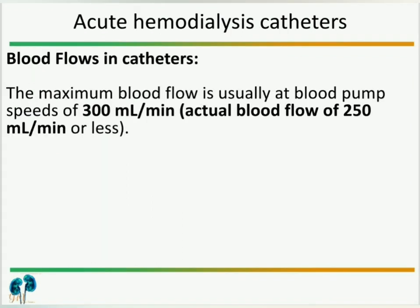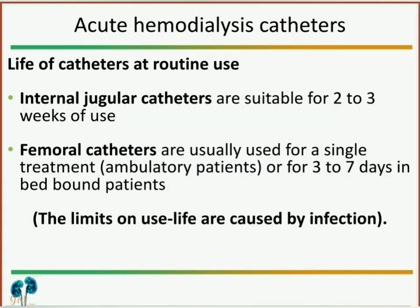For acute hemodialysis catheters, the maximum blood flow we can set is 300 ml per minute. However, the actual blood flow is around 250 ml per minute or less, because of recirculation. As discussed, the acute hemodialysis catheter is for temporary use.